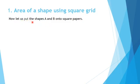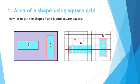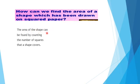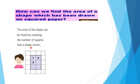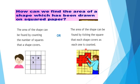Let us put shapes A and B onto the square paper. How can we find the area of a shape which has been drawn on a square paper? We have two ways. The area of the shape can be found by counting the number of squares that a shape covers, as each one is counted, as shown here.